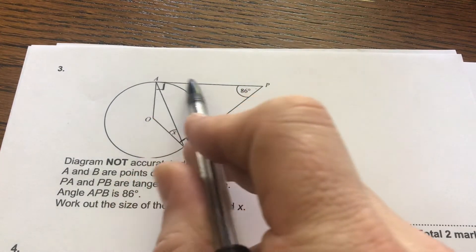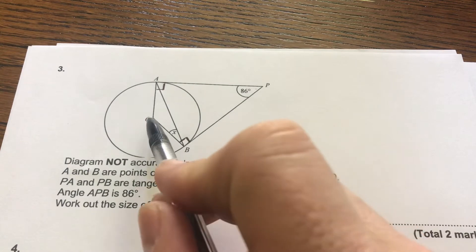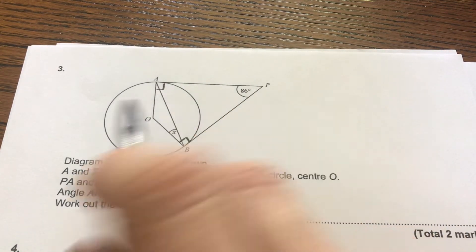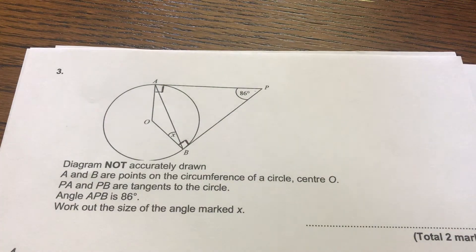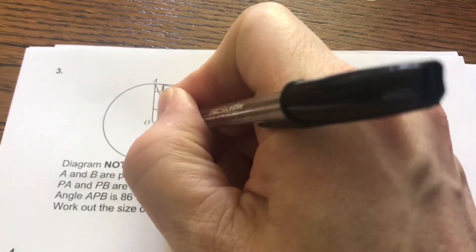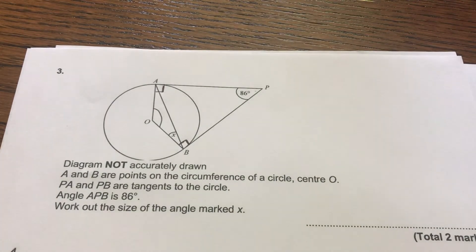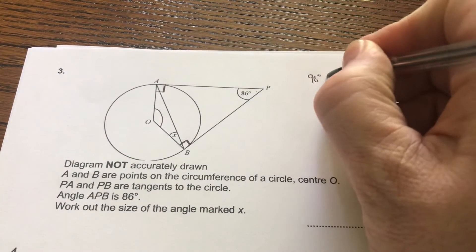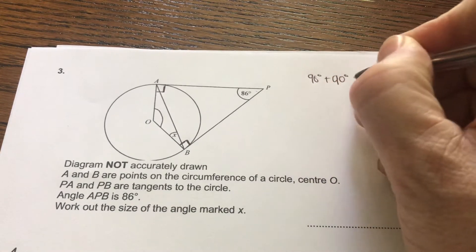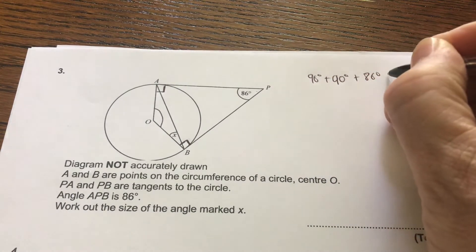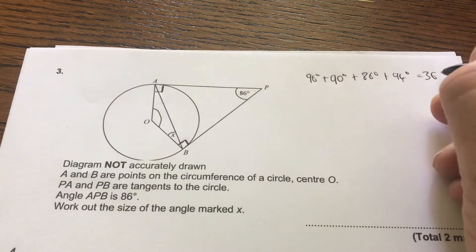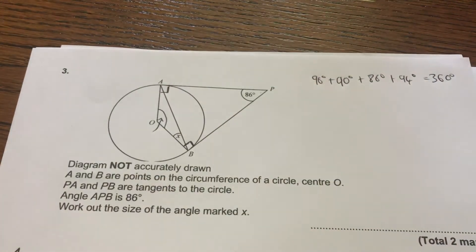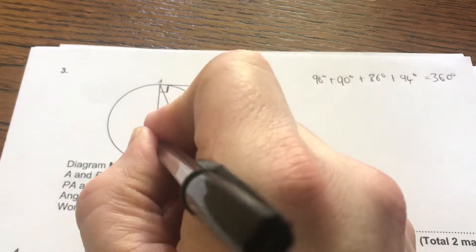So this is 86, 90, 90. And we have here, I'm just showing you, with my pen, a kite. Now the angles in that kite must all add up to 360 degrees because it's a quadrilateral. So you've got your 90 degrees plus your 90 degrees plus 86 degrees plus of course 94 degrees equals 360 degrees. So that angle there is 94 degrees.